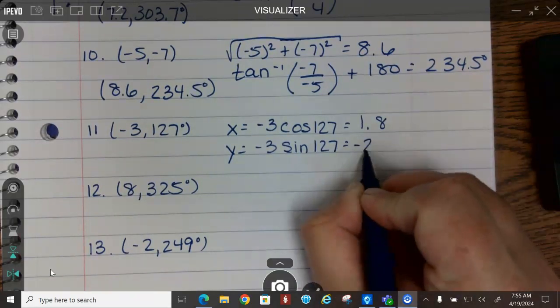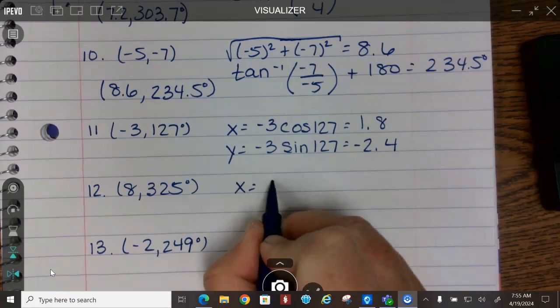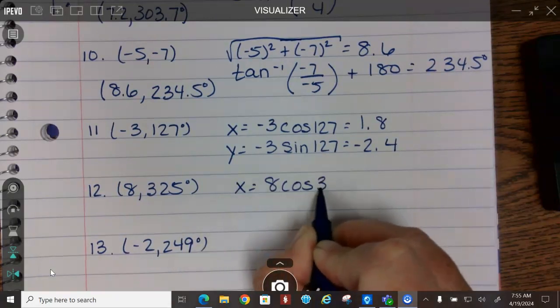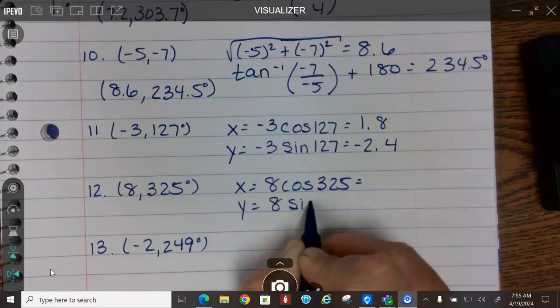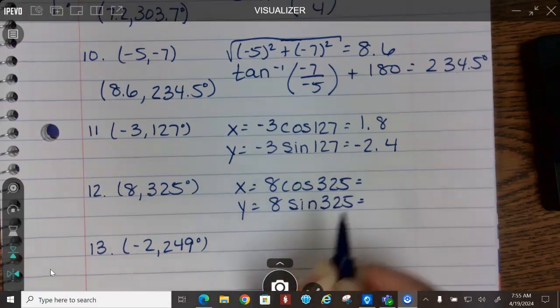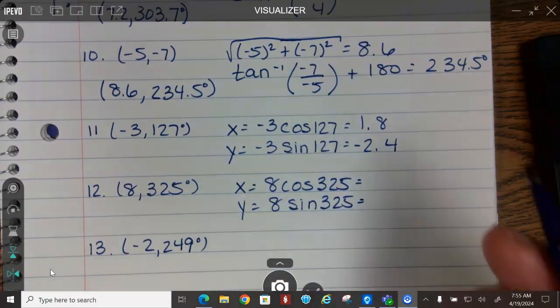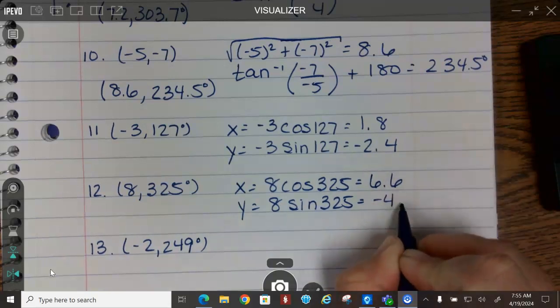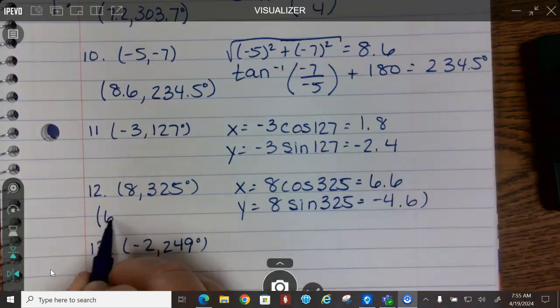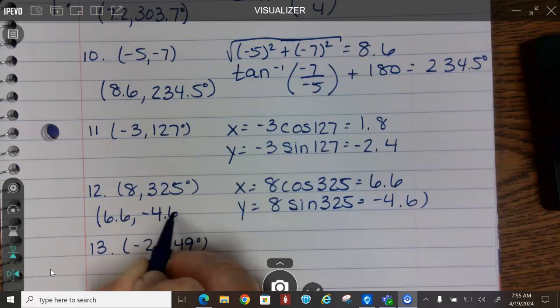X equals 8 cosine 325, and y equals 8 sine 325. We get 6.6 and 8 sine 325 equals negative 4.6. You can write these in a nice format, 1.8 comma negative 2.4.